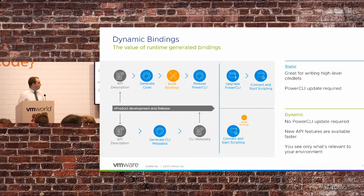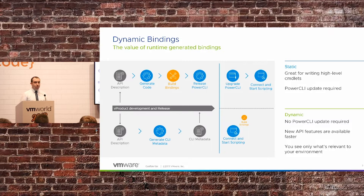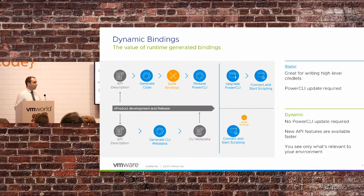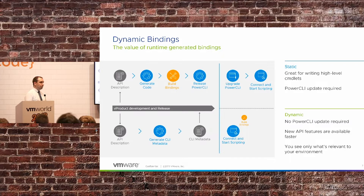This has a couple of advantages. You don't need to upgrade PowerCLI. New API features are available as soon as you deploy the products and have the module. And when you connect and get the metadata from the server, it shows you only what's available and relevant to your particular environment. If you're running an older version, it won't show you new features. If you're on a newer environment, it will show you an improved feature.